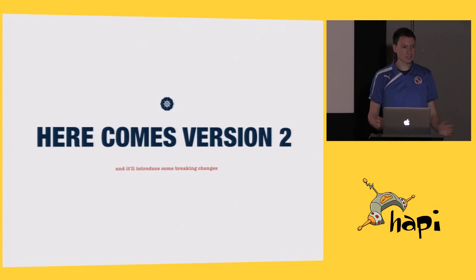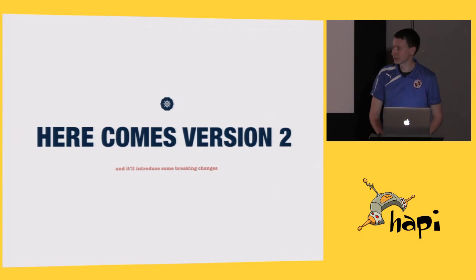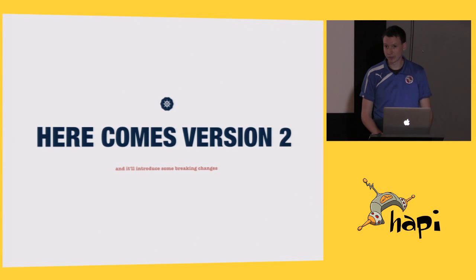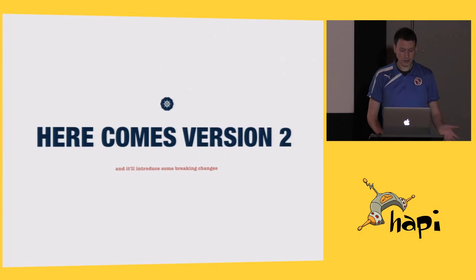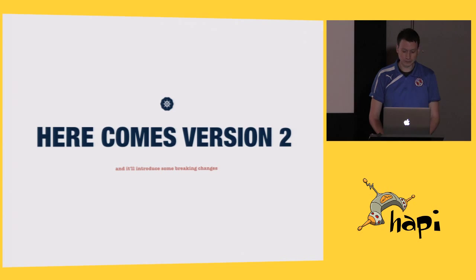Now we've got to the point where everyone was so excited by it, we want to go on to version 2 and improve it, because it didn't do too much, and we're going to introduce some breaking changes. But we're going to be good net citizens — we're not going to break the previous calls for anyone that is relying on it, and we're going to version our API.